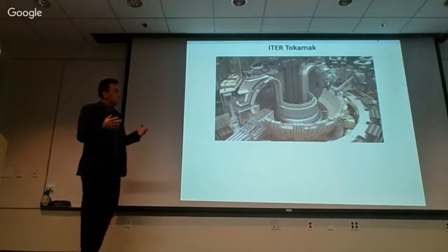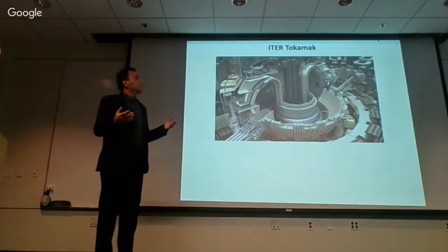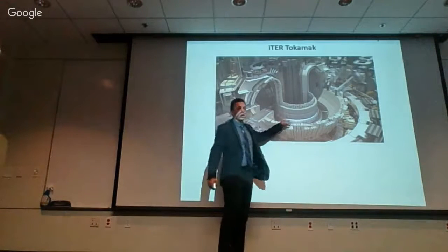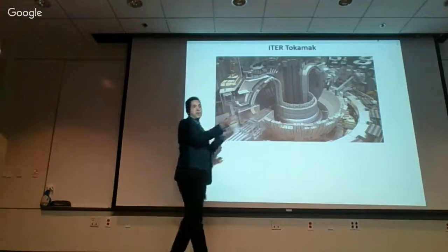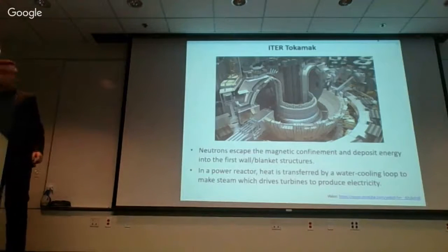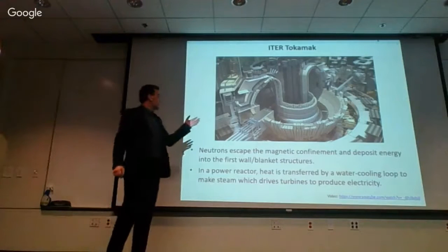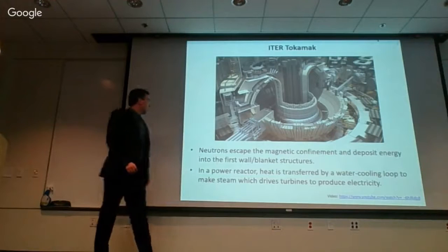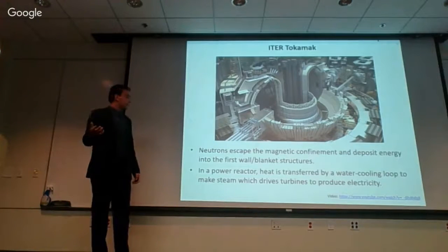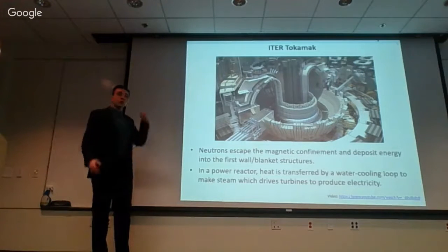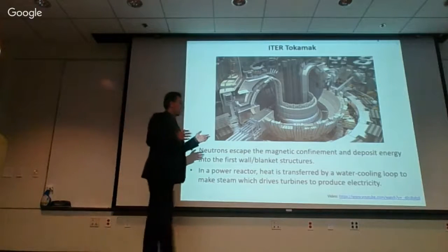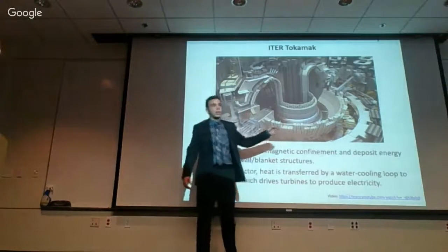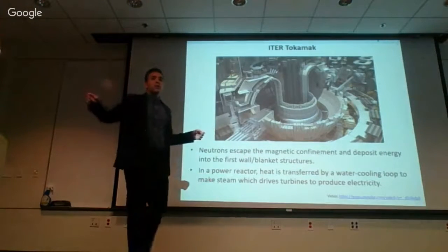The process we are working on here is to develop materials to build this first wall — the structures that have to face the very hot plasma. From the plasma, high-energy neutrons escape the magnetic confinement and deposit their energy into the first wall and blanket structures. In a future power reactor, heat is transferred by a water cooling loop to make steam, which will then drive turbines to produce electricity. There will be cooling lines running through the structure that withdraw this heat.